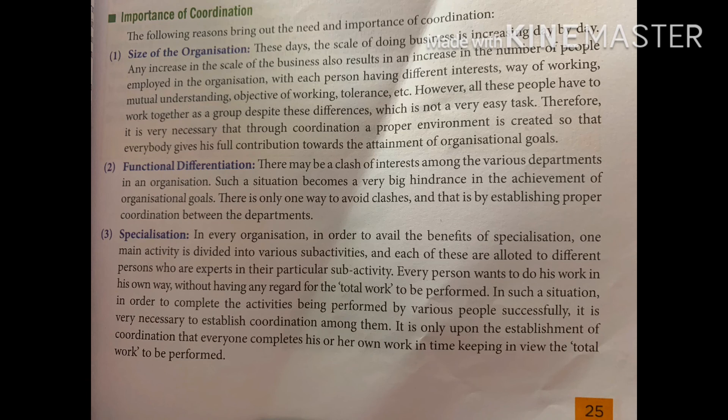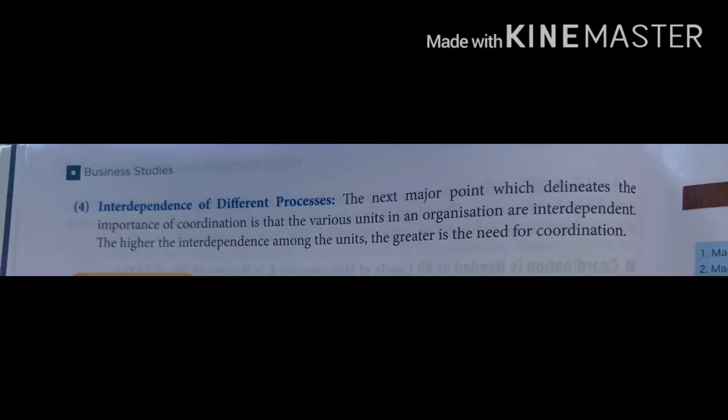Third: specialization. In large and modern organizations there is a high degree of specialization. Because the number of specialists working in the organization is more, they feel they are the only qualified people and always take the right decisions. So there is a need to coordinate the activities of all the specialists. Fourth: interdependence of different processes — a company has many units that are interdependent, and greater interdependence means a greater need for coordination.